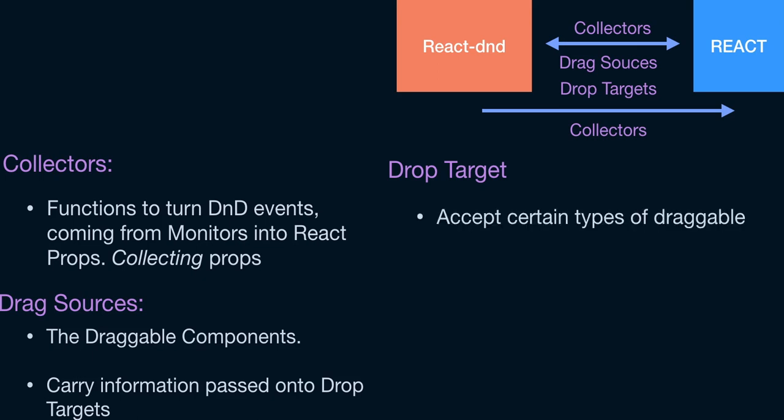The last concept is drop targets. Drop targets accept certain types of draggable components — some drag sources can be dropped on certain drop targets and others cannot, so they are selective. The second thing drop targets do is execute functions based on DnD events. You can write code that executes a function whenever a drag source is dropped onto a drop target, or whenever it is hovering over it.